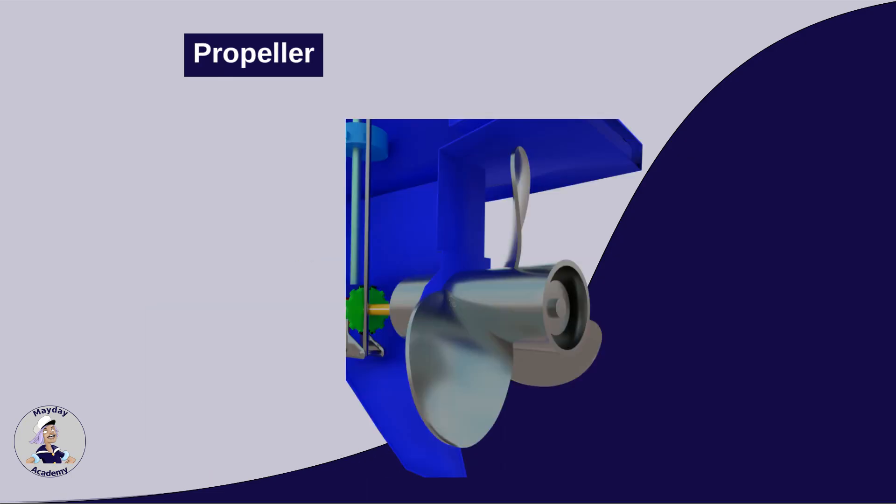Attached at the end of the drive shaft, the propeller is the final piece of the puzzle. When it spins, it pushes water backward, which, in turn, propels the boat forward. The design of the propeller, including its size and the angle of its blades, greatly affects the boat's performance.